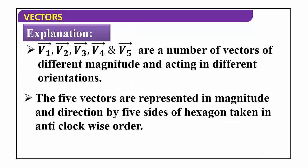We represent all 5 vectors by 5 sides of the polygon taken in the anticlockwise direction. Either we consider 4 sides, 5 sides, or n number of sides — the closing side is always the resultant vector acting in the opposite direction. The statement for polygon law: when a number of vectors are represented in magnitude and direction by the sides of a polygon taken in the same order, then the resultant vector is the closing side taken in the opposite direction.